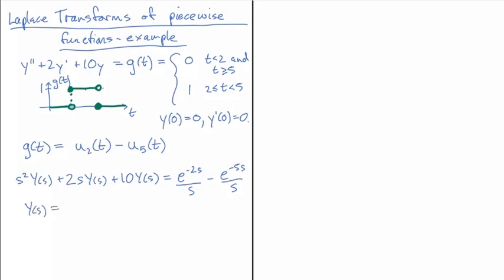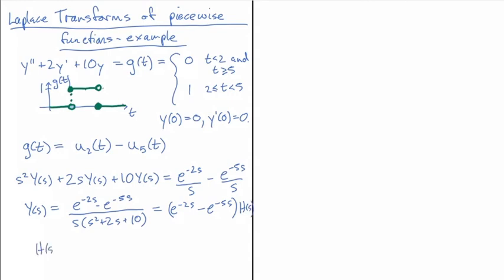Solving for Y of s gives us e to the minus 2s minus e to the minus 5s, all divided by s times s squared plus 2s plus 10. To simplify notation, I'll write this as e to the minus 2s minus e to the minus 5s, multiplied by H of s, where H of s equals 1 over s times s squared plus 2s plus 10.